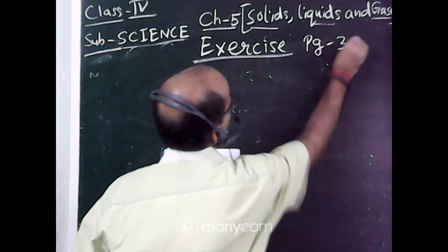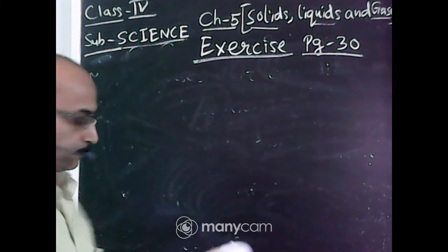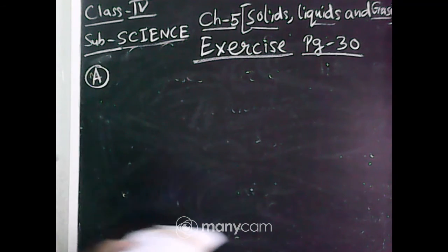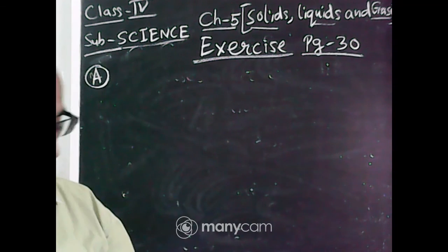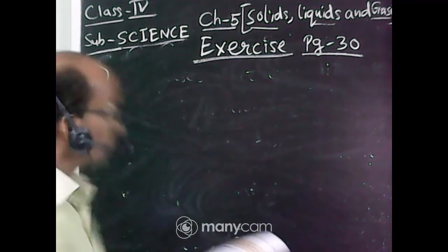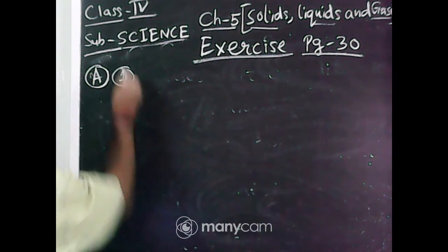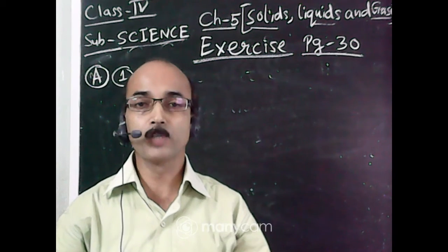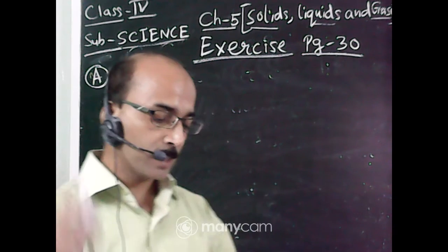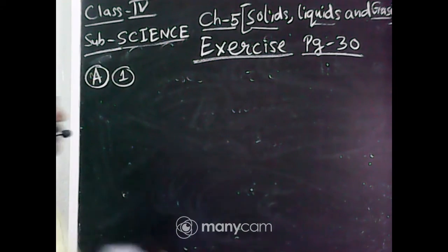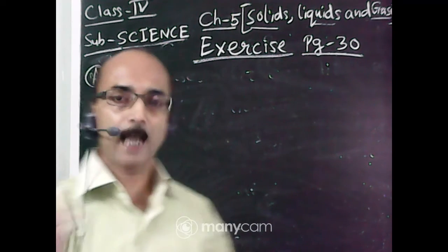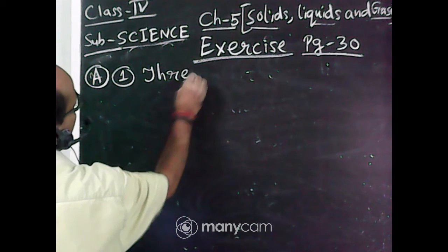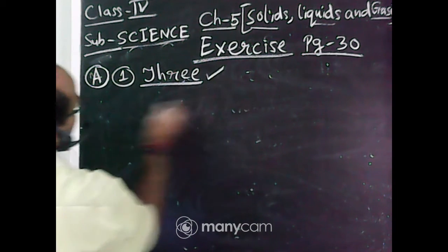We will discuss the exercise from page number 30. Number A, tick the correct answer, your MCQ. Number one: matter exists in dash states - one, two, three. The correct answer is three. Matter exists in three states: solid, liquid and gas.